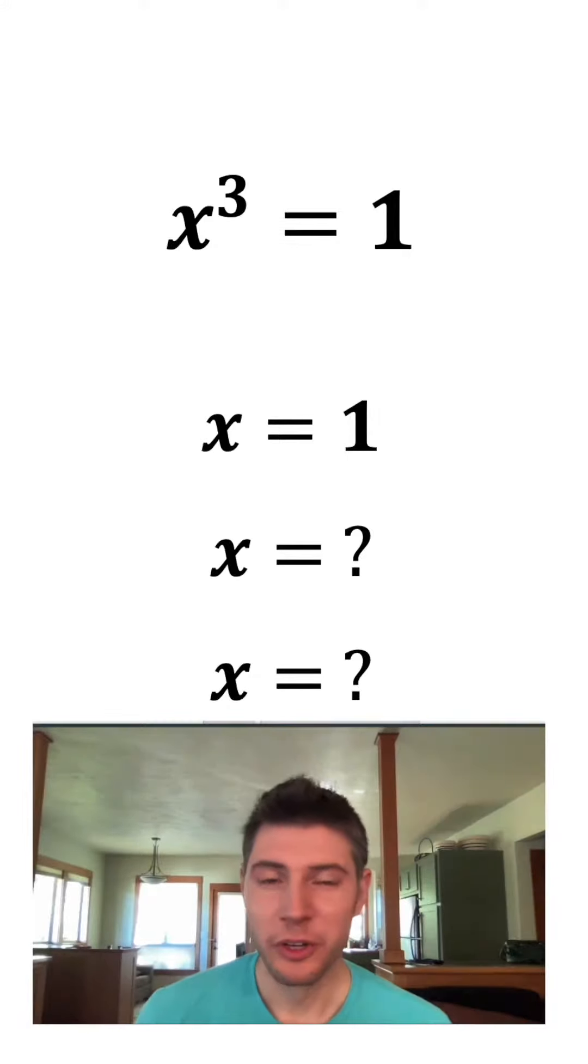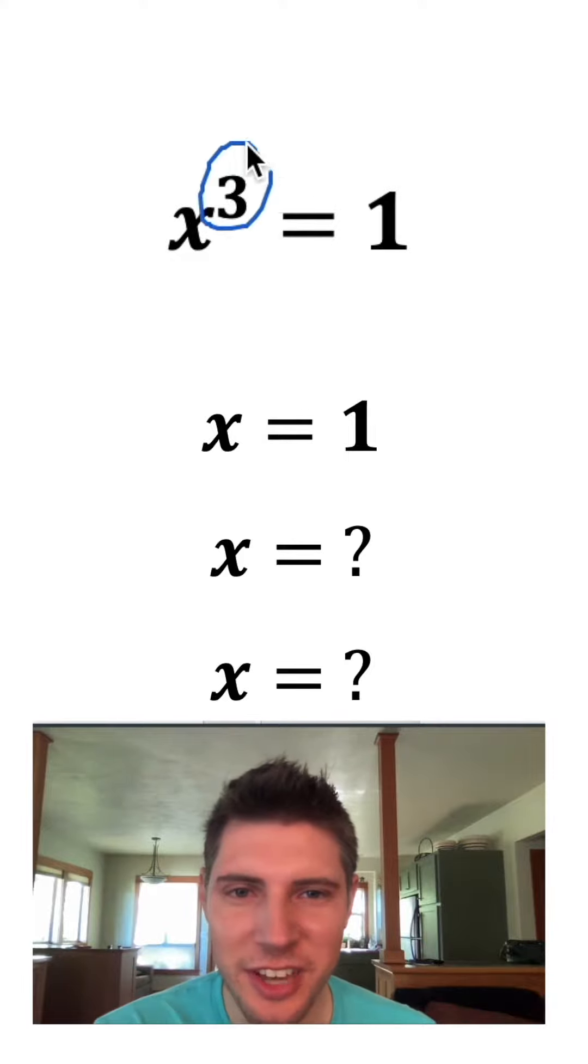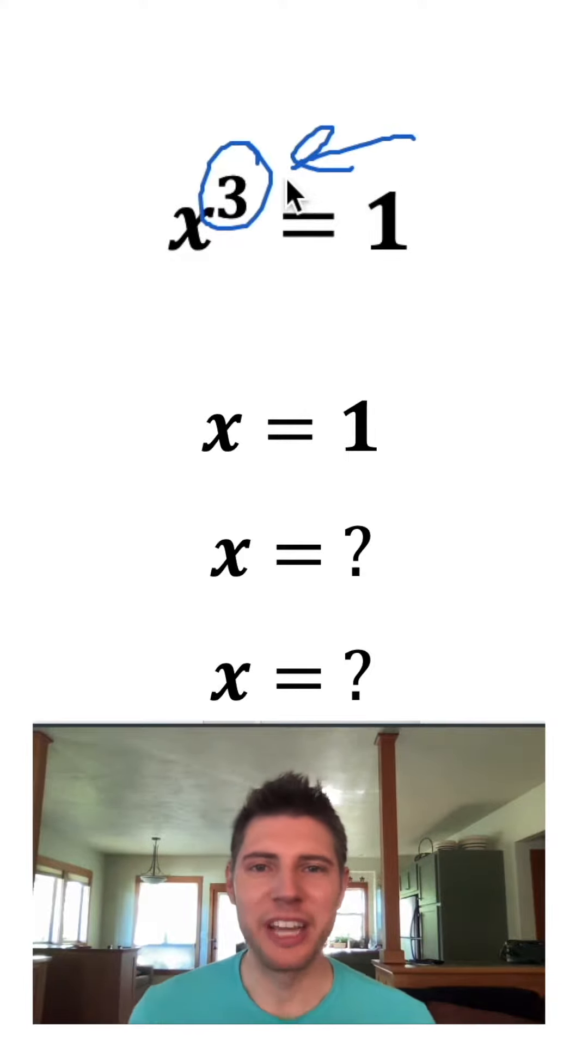If we have x cubed equals one, we know that one answer is x equals one. But what are the other answers? Because this has a degree of three, that means there should be three answers.